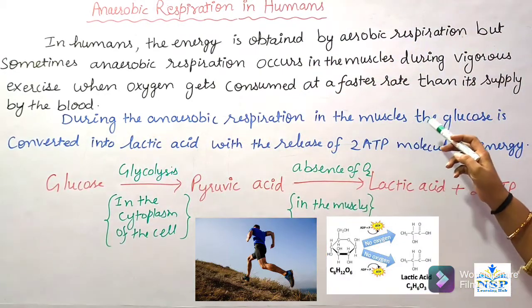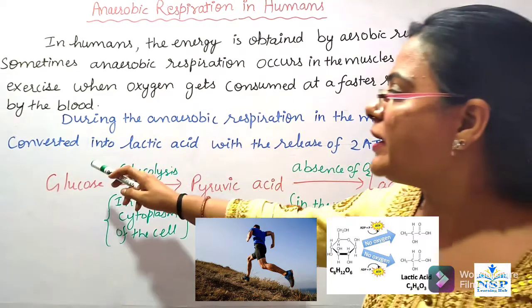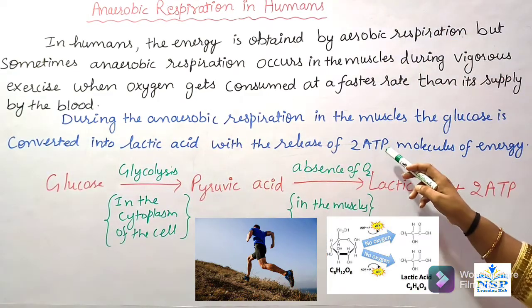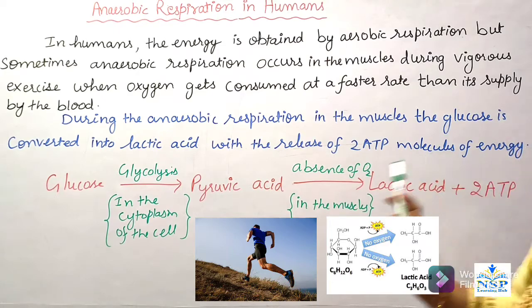During anaerobic respiration in the muscles, glucose is converted into lactic acid with the release of 2 ATP molecules of energy.